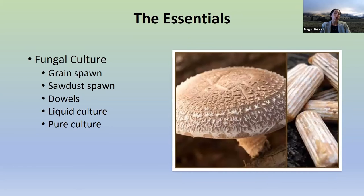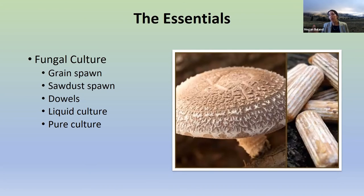Wooden dowels are very popular for shiitake cultivation — they're hammered into logs. It's a very easy method, especially for large-scale cultivation: you drill all the holes in a log, hammer in the dowels, and have someone covering them up with canning wax to seal them off from the environment. It's a very straightforward method for rapid, large-scale cultivation.